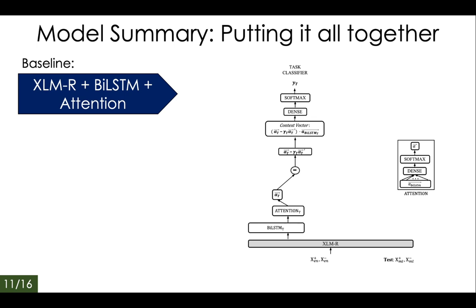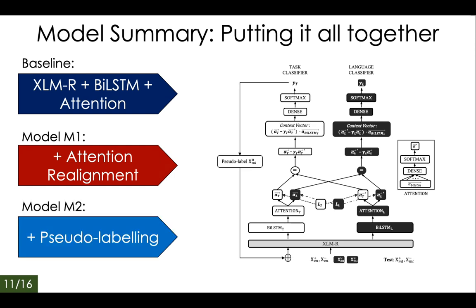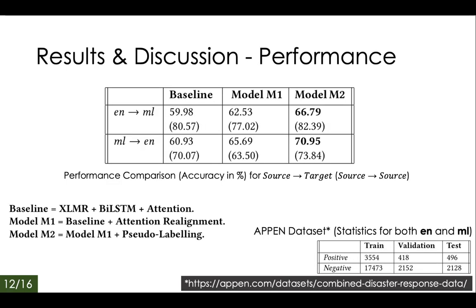Here is a summary of all our models. The baseline is the BiLSTM plus attention model built on top of XLMR. Model M1 is the attention realignment mechanism, which separates the attention weights of the two classifiers using attention difference and attention loss. Model M2 adds the pseudo-labeling procedure to M1. Our experimental setup uses the open-source Appen dataset of multilingual tweets and their English translations. We saw a 4.3% improvement for model M1 and 11.4% improvement for model M2. Notably, attention realignment decreased performance when trained and tested in the same language, shown in brackets, but pseudo-labeling brought this back up.